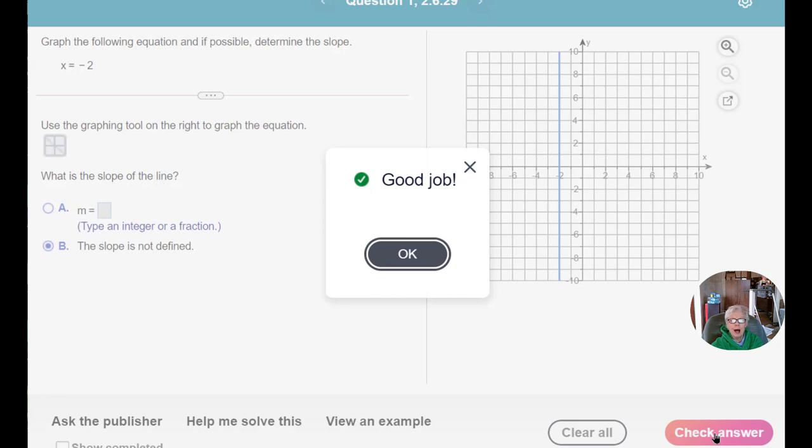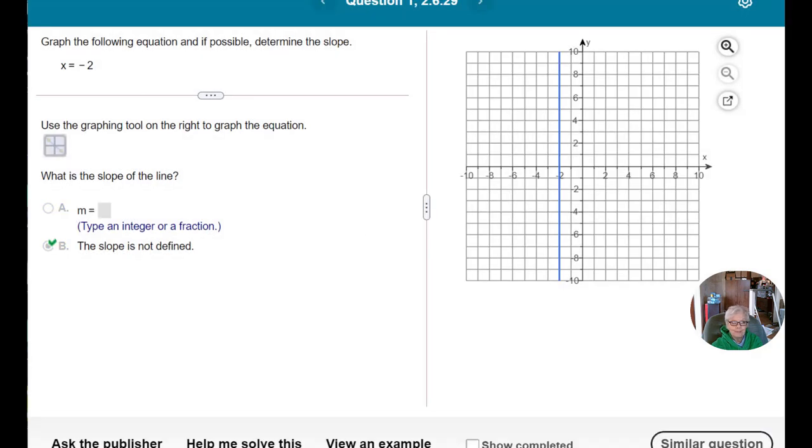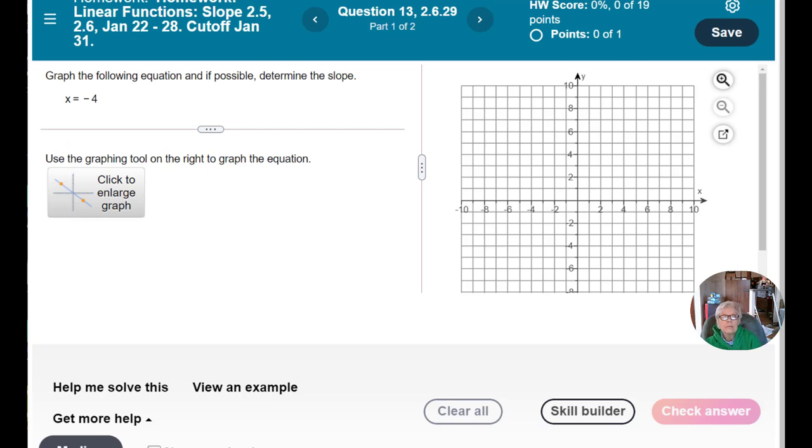But it's easier just to memorize that the slope of a vertical line is undefined. And therefore, the slope is not defined. So I click there. And I'm done. Good job.